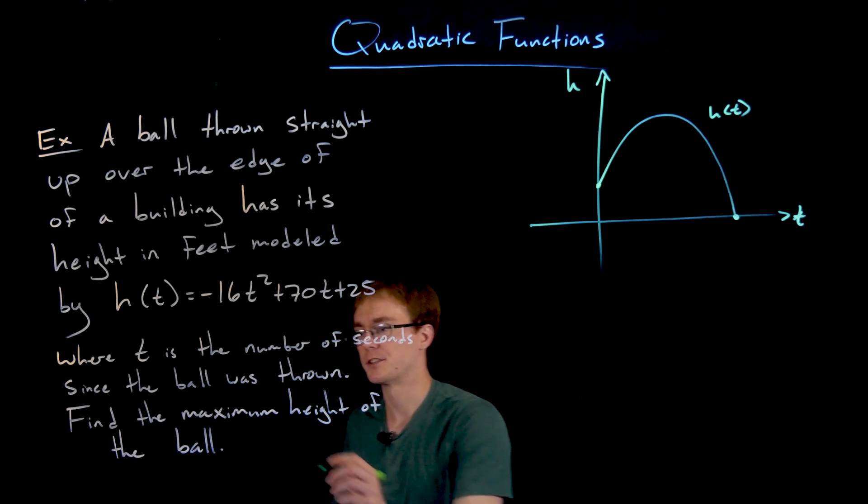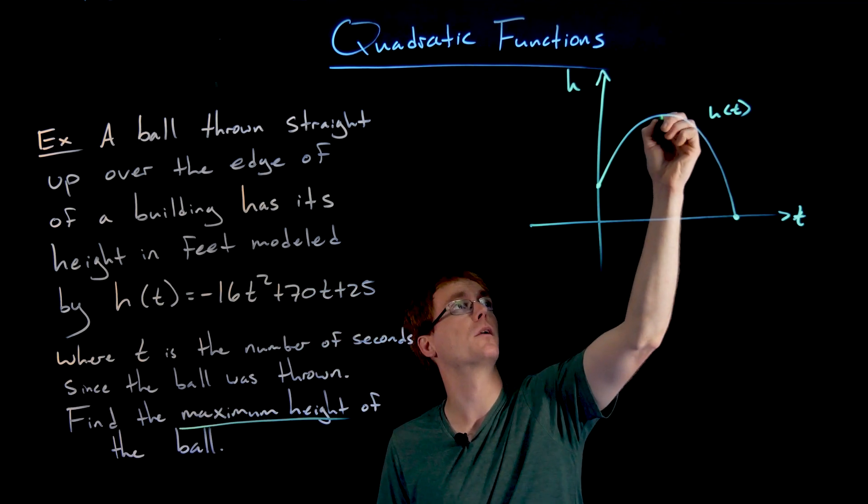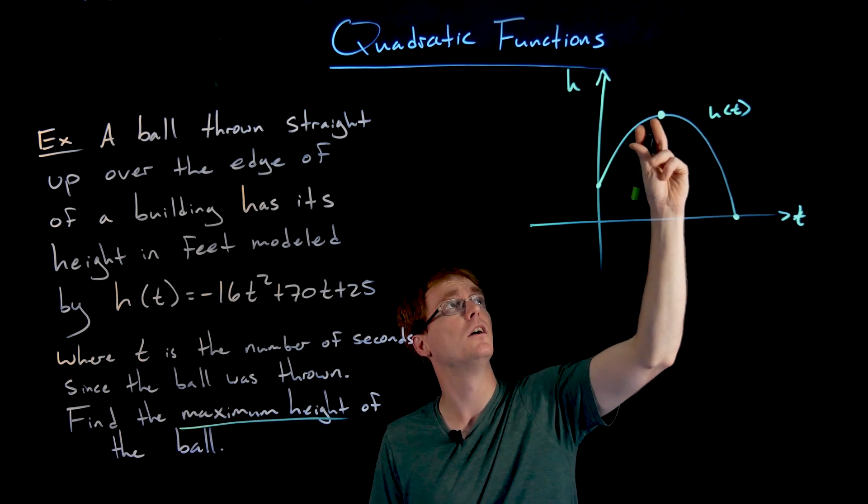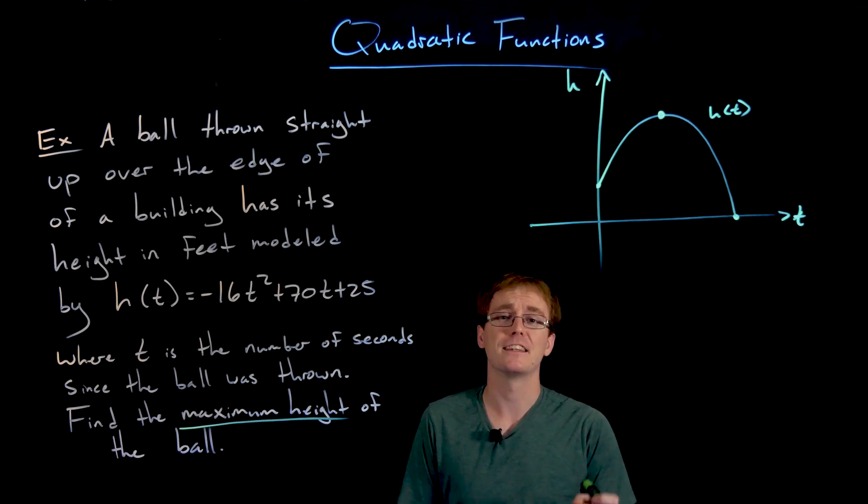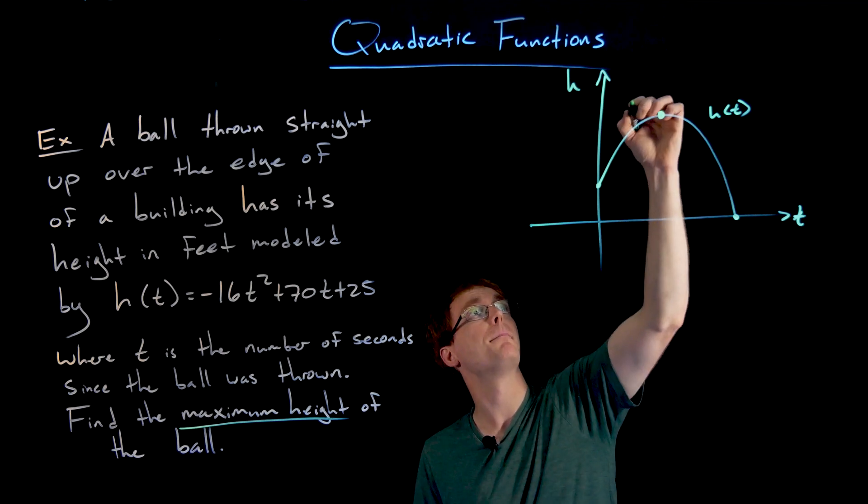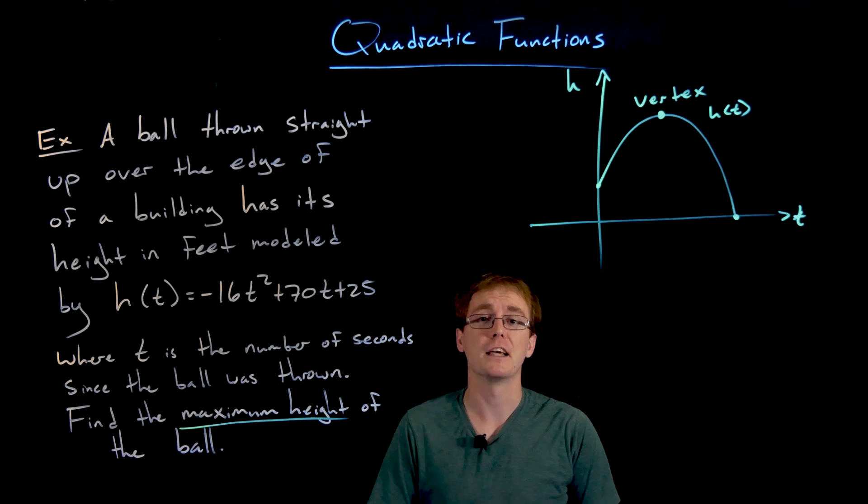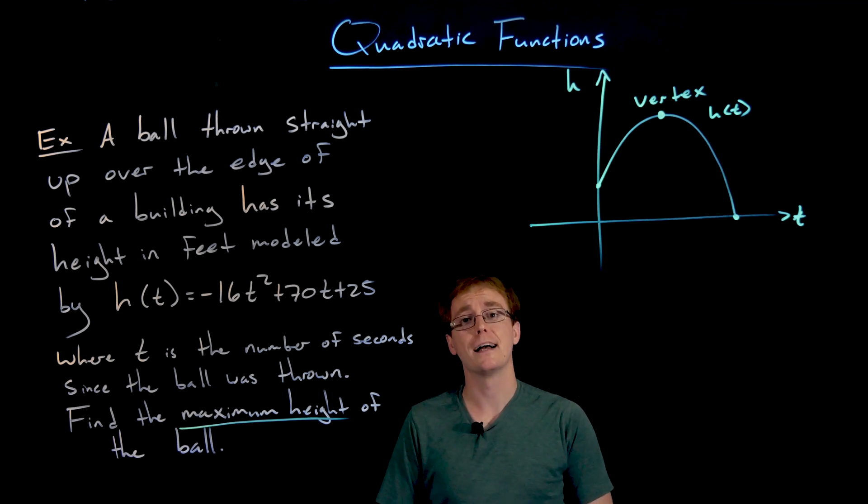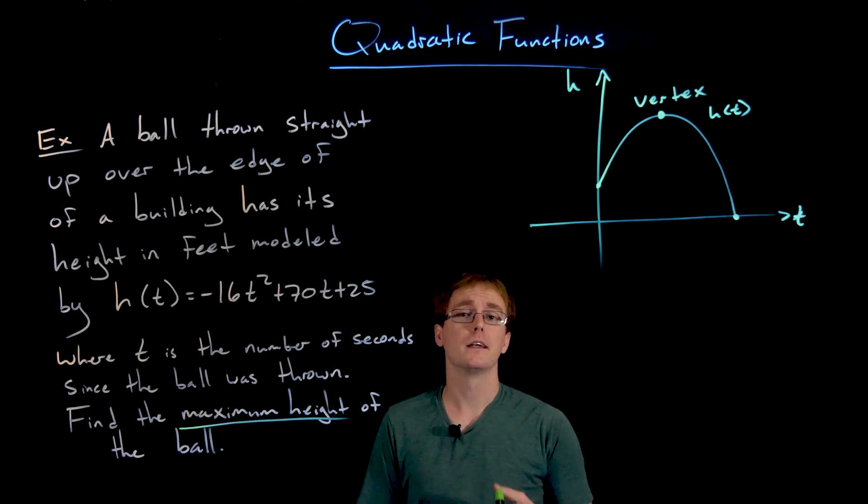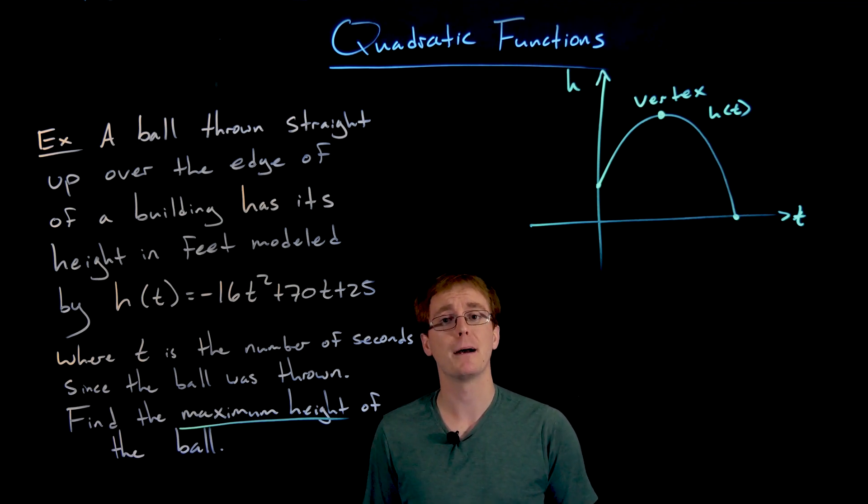We are interested in finding the maximum height of our ball. This point at the very top of our curve, at the top of our parabola, that maximum or the top of our concave down parabola is what we refer to as the vertex. Now we have to recall those important pieces of information about the vertex.